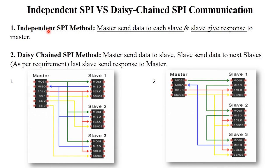The next point is independent SPI versus daisy chain SPI communication. In independent SPI, there is one master and multiple slaves — microcontroller, analog to digital converter, sensor, and LED. Master communicates with every slave separately. Master first sends clock signals (red line), then slave select (yellow line), then sends data through the green color line (MOSI). Slave one then gives the response to master through the blue color MISO line. This is the independent SPI method.